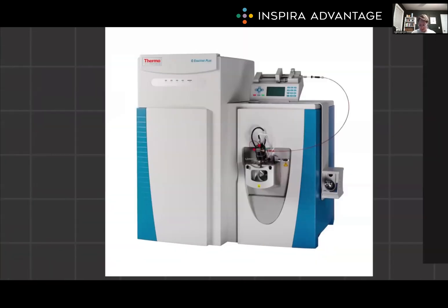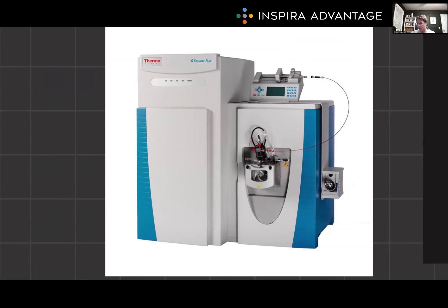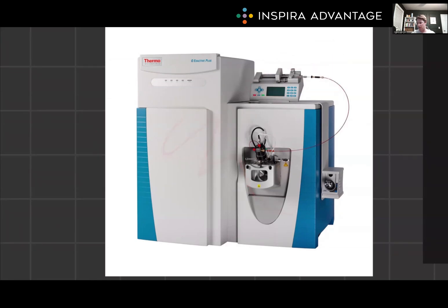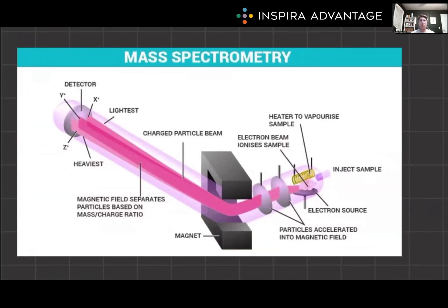First, this is what a mass spectrometer looks like. There are many different variations, but they all do kind of the same thing. You're going to inject your compound into the machine and it's going to get analyzed. Mass spectrometry is based on the principle of ionizing molecules and separating the resulting ions according to their mass to charge ratio — your M/Z ratio.